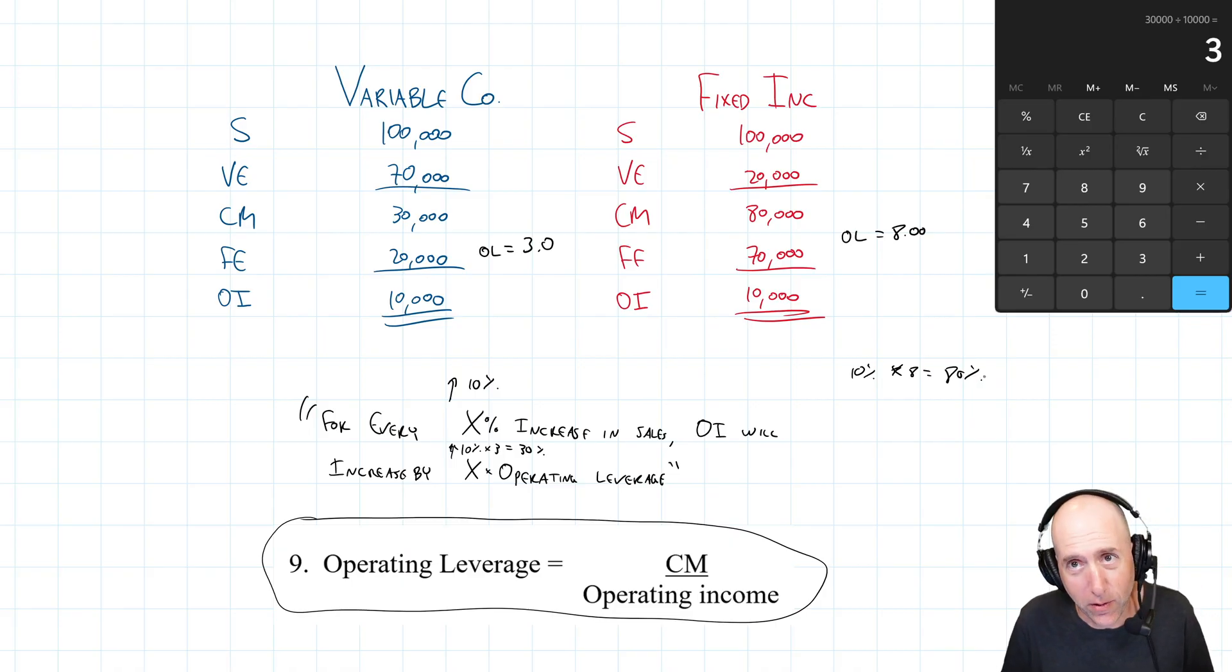So for variable company, operating income is going to go up by 10% times three, 30%. For fixed company, operating income is going to go up by 10% times eight, 80%. Now it also works going down. So fixed company is riskier than variable company, but they have bigger upside as well. And that should make intuitive sense, right? If fixed company's sales really drop, well, it's stuck with all these fixed costs. The fixed costs don't drop. If variable company sales really drop, well, their variable costs drop with them. And most of their costs are variable.